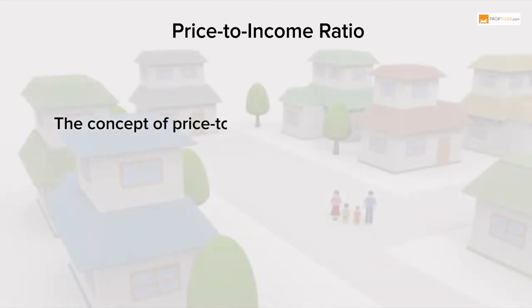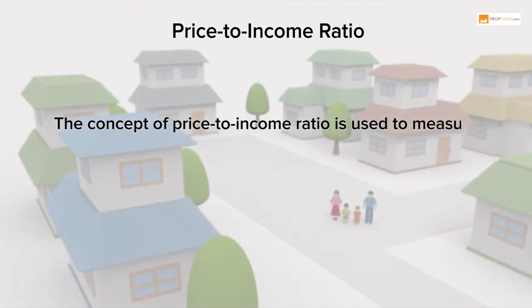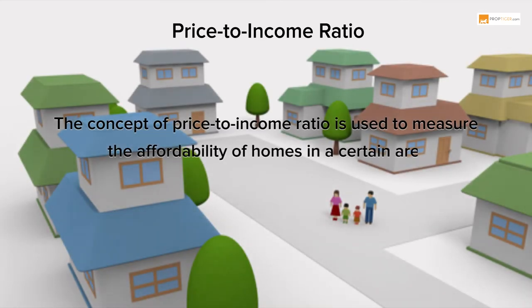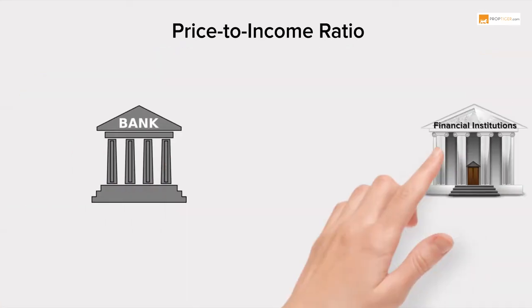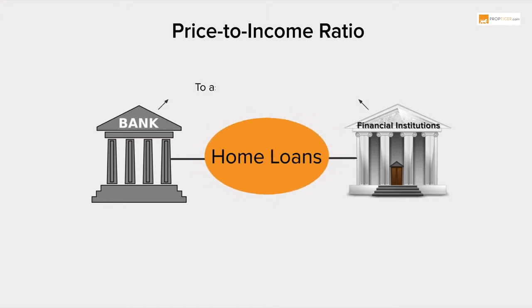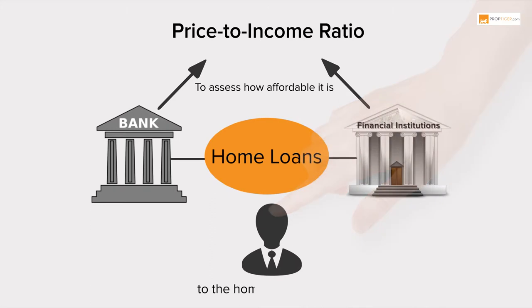The concept of price to income ratio is used to measure the affordability of homes in a certain area. When banks and financial institutions extend home loans, they tend to consider the price to income ratio to assess how affordable it is to the home loan seeker.